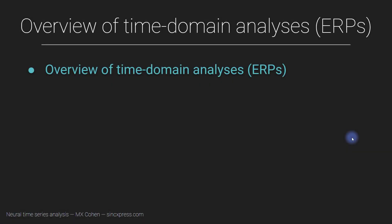In this video, I'm going to give you a brief overview of the main time domain analysis method that's applied in cognitive electrophysiology, and that is called the event-related potential, or ERP.